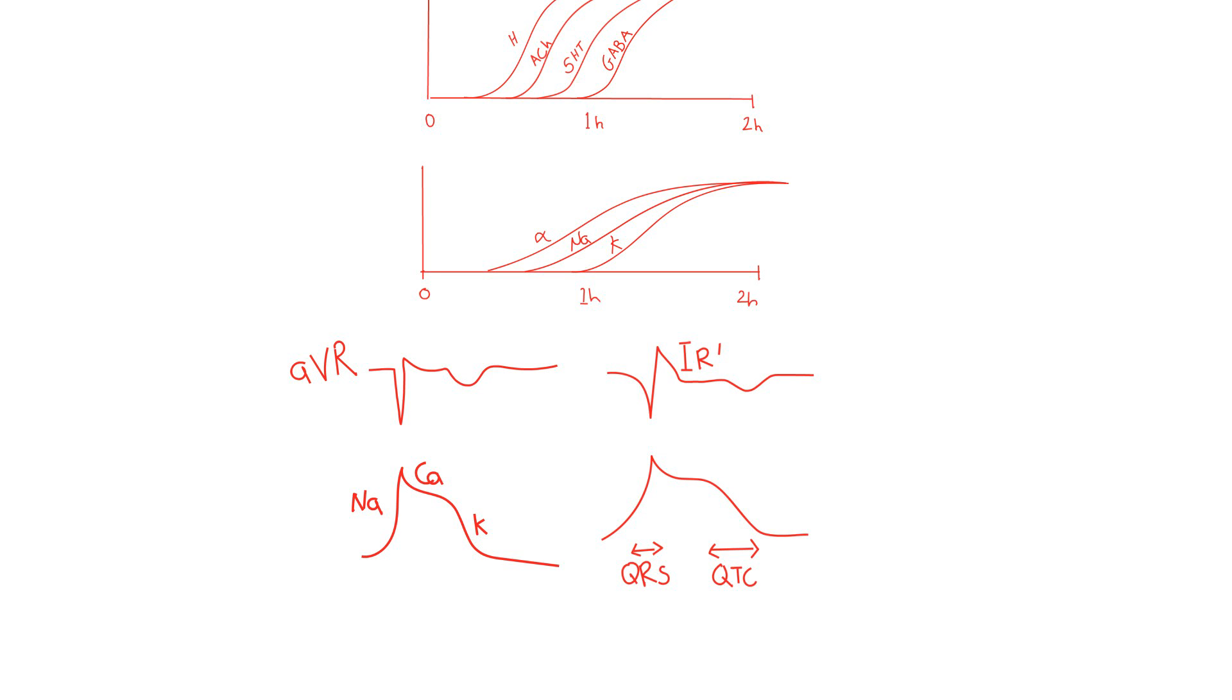Natively, the right bundle and the left bundle have different speeds of depolarization and repolarization, with the right bundle being slower. Very early TCA toxicities exacerbate this difference, giving the EKG an overall right bundle pattern.